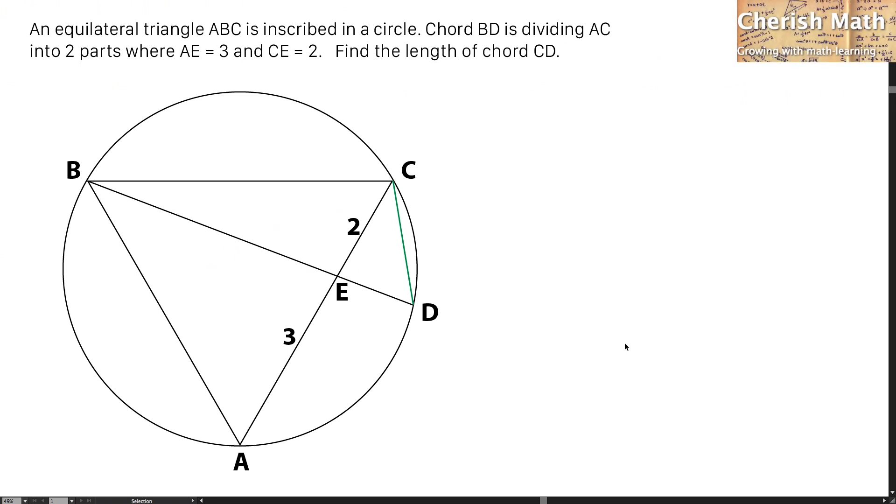Hi from Cherish Math. This is the question: An equilateral triangle ABC is inscribed in a circle. Chord BD is dividing AC into two parts where AE equals 3 and CE equals 2. Find the length of chord CD.